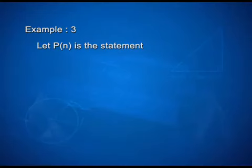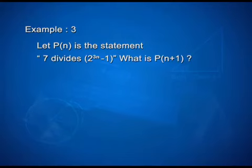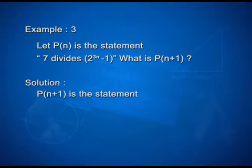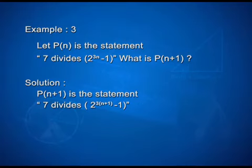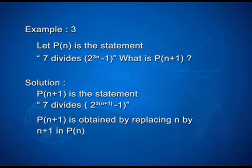Let us look into one more interesting example. Let P(n) be the statement: 7 divides 2^(3n) − 1. What is P(n+1)? P(n+1) is the statement: 7 divides 2^(3(n+1)) − 1. Here, P(n+1) is obtained by replacing n by n+1 in P(n).